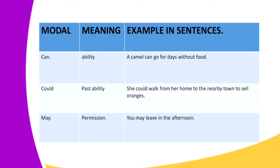Let us look at the modal 'can.' Whenever we want to use the modal 'can,' it should be used to show ability — if you are able to do something. For example: 'A camel can go for days without food.' That shows ability — a camel is able to go for days without food.